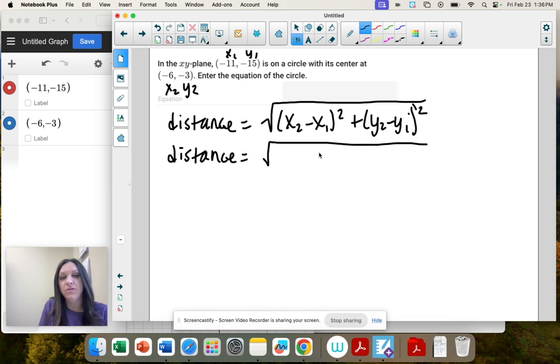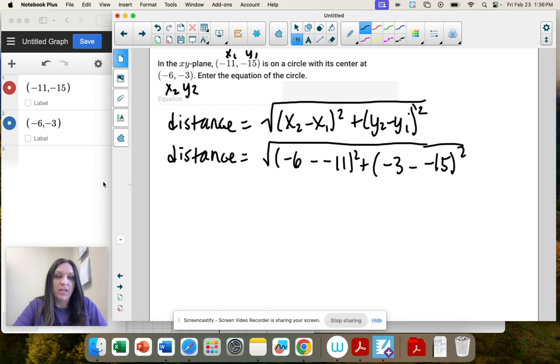So square root x2 is negative 6, x1 is negative 11, y2 negative 3, minus y1 negative 15. So that whole thing I'm going to put in the calculator.